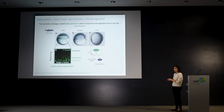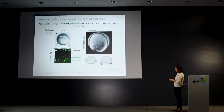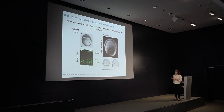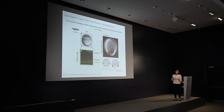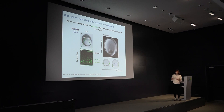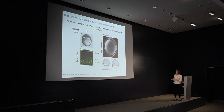Soon after these patterns are laid down at the start of the process, morphogenesis kicks in and completely reshapes the entire embryo. The mesendoderm tissue specified within the margin will undergo internalization — this is really important because endoderm and mesoderm cells give rise to internal organs such as the gastrointestinal tract, the blood, or the heart, so everything needs to be on the inside.